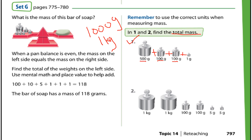700 plus 1 equals 701, so the total mass is 701 grams. Likewise, you will do question 2.